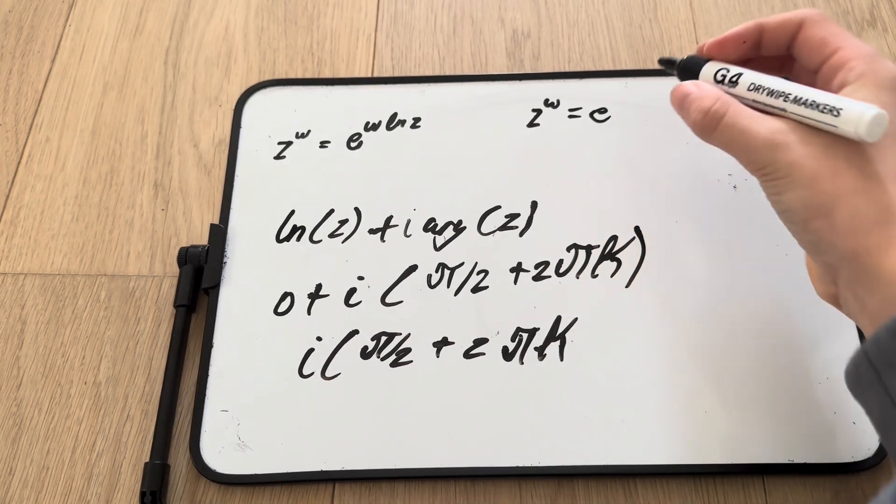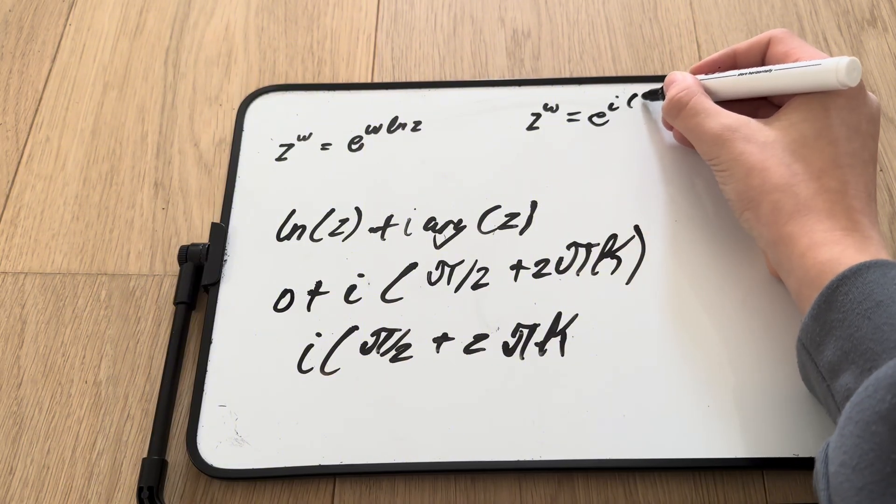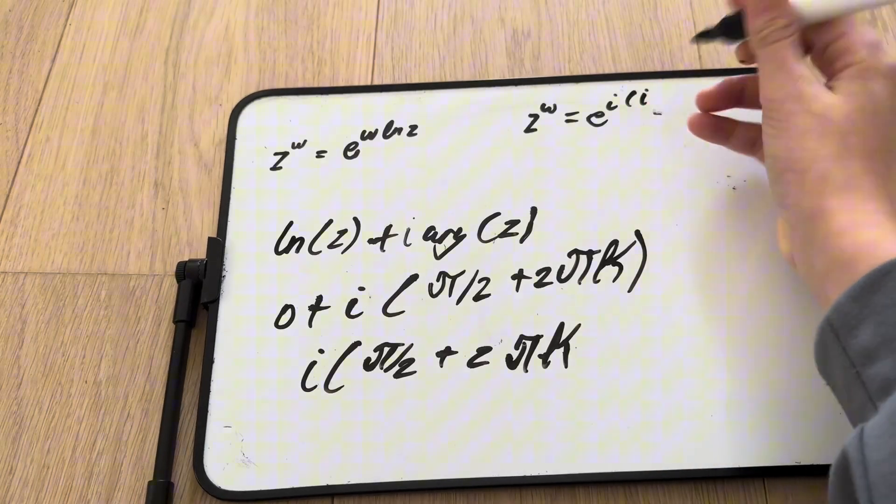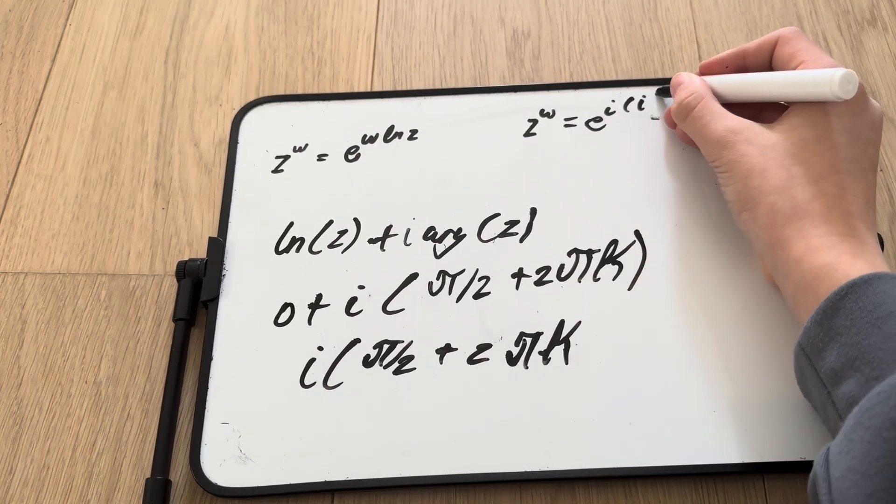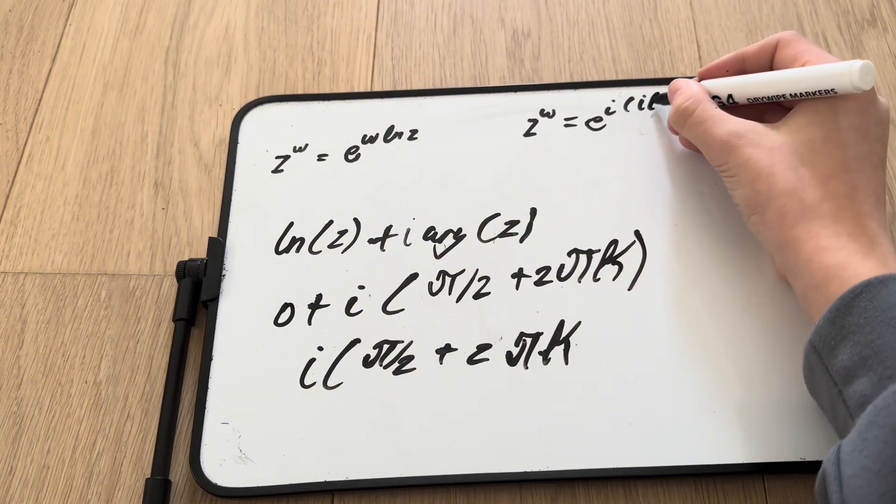It's equal to e to the i multiplied by pi over 2.